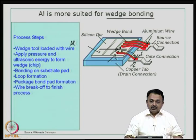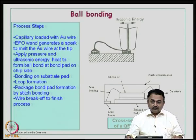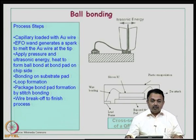This has to be faster in the industry if you want to have more throughput from the wedge bonding process. Now let us see what is a ball bonding process. Obviously, as the name indicates, you have to form a ball of the gold wire. The most popular material for ball bonding is gold.